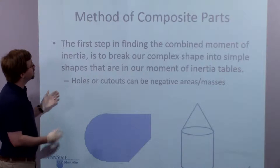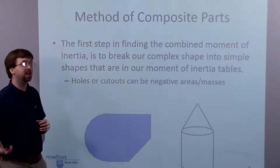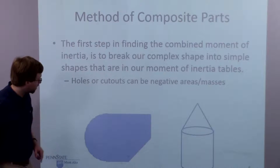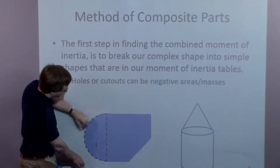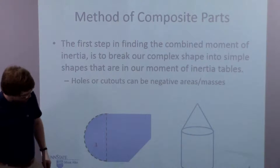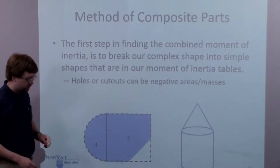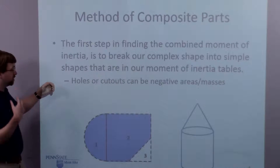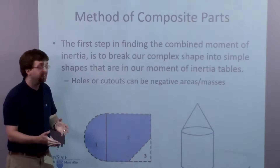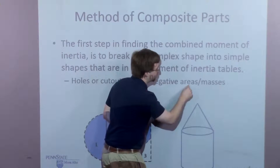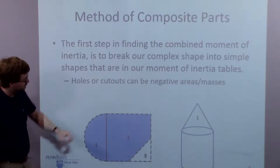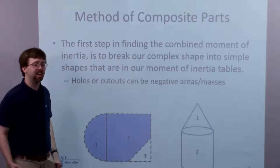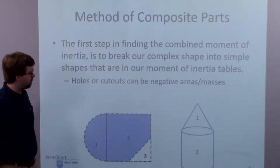Going back to step one: the first step is to break our complex shape down into simple shapes that are in our moment of inertia table. For example, with this area, I might identify a semicircle, then a big square, and then a negative shape — cutting off a triangle. Any hole, cutout, or missing piece is counted as a negative area or negative mass. For a volume example, a cone on top of a cylinder can be added together to get a rocket shape. So step one: break it down into separate bodies.